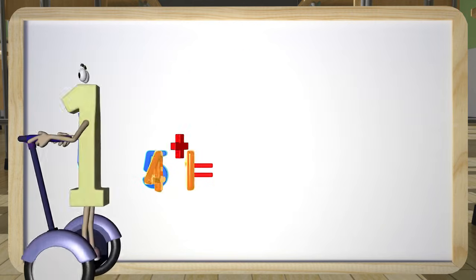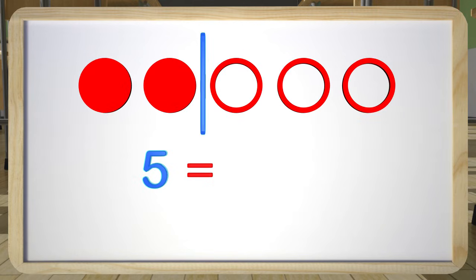Wait a minute, we have more circles again with another line separating the circles. Maybe there are more numbers hiding in the number five. Two of the circles on the left are colored in, so let's put down a two.